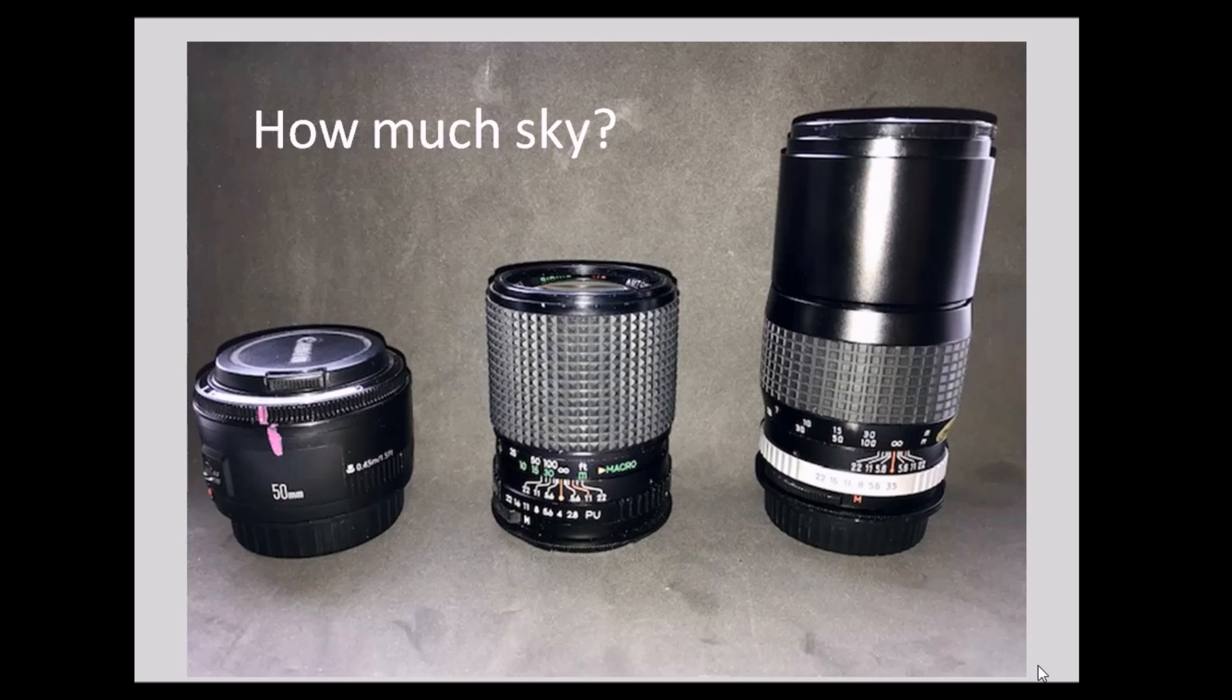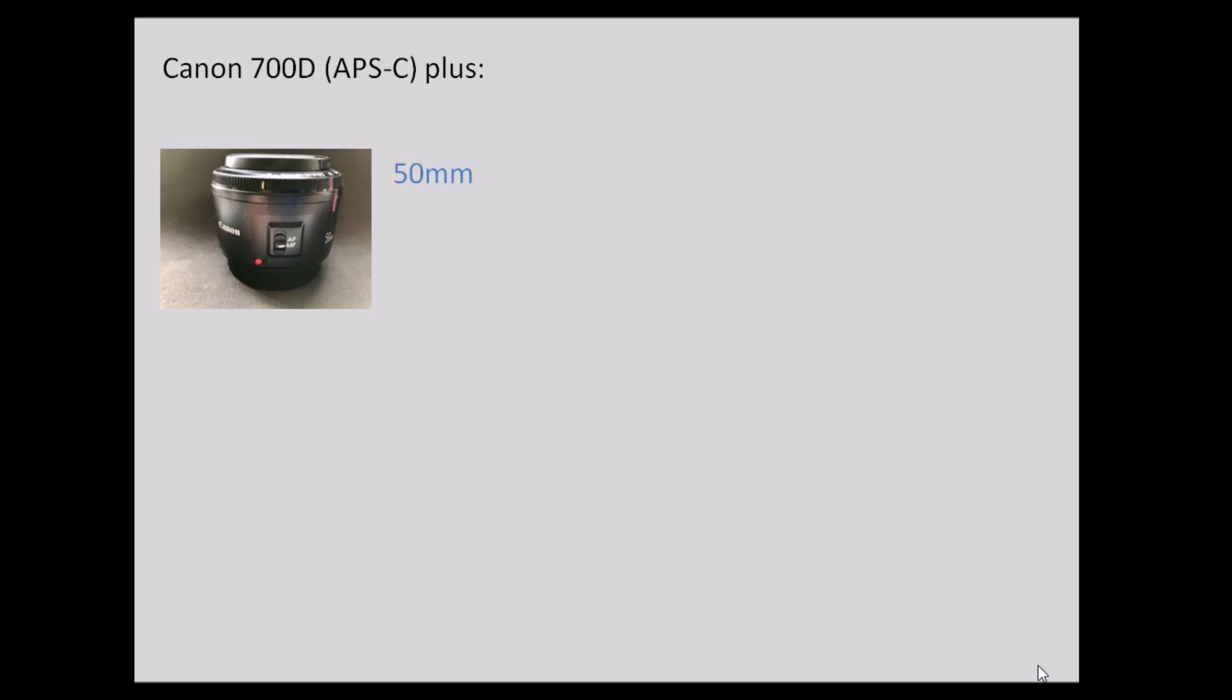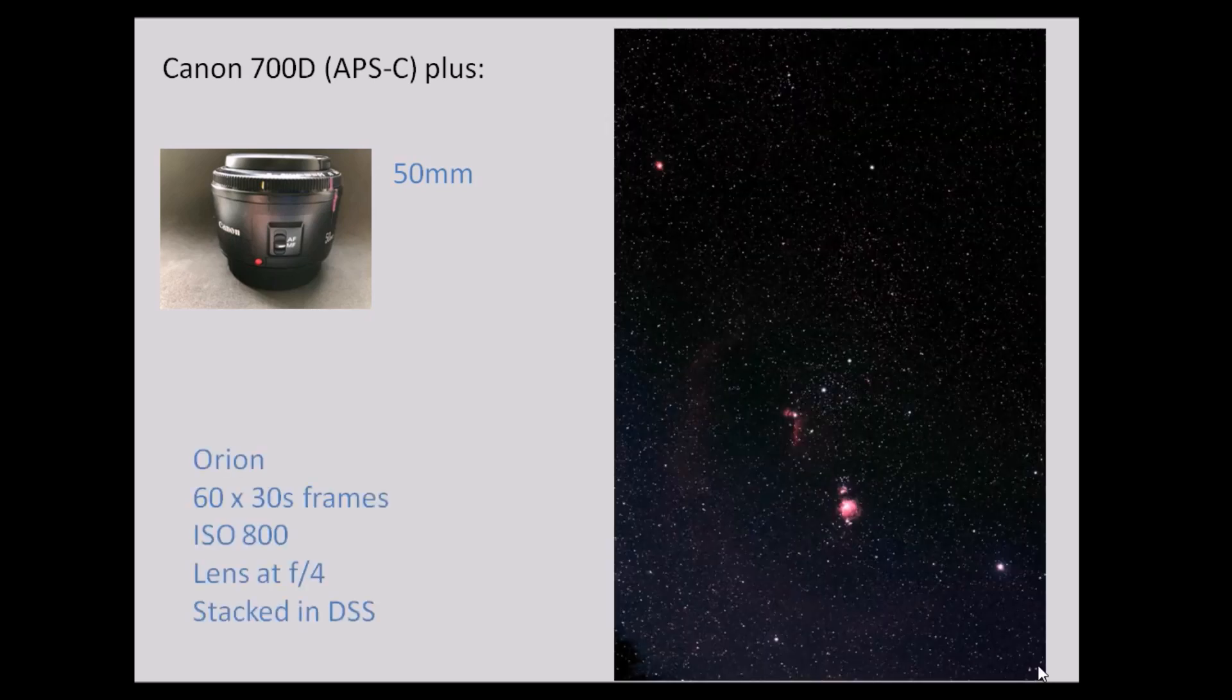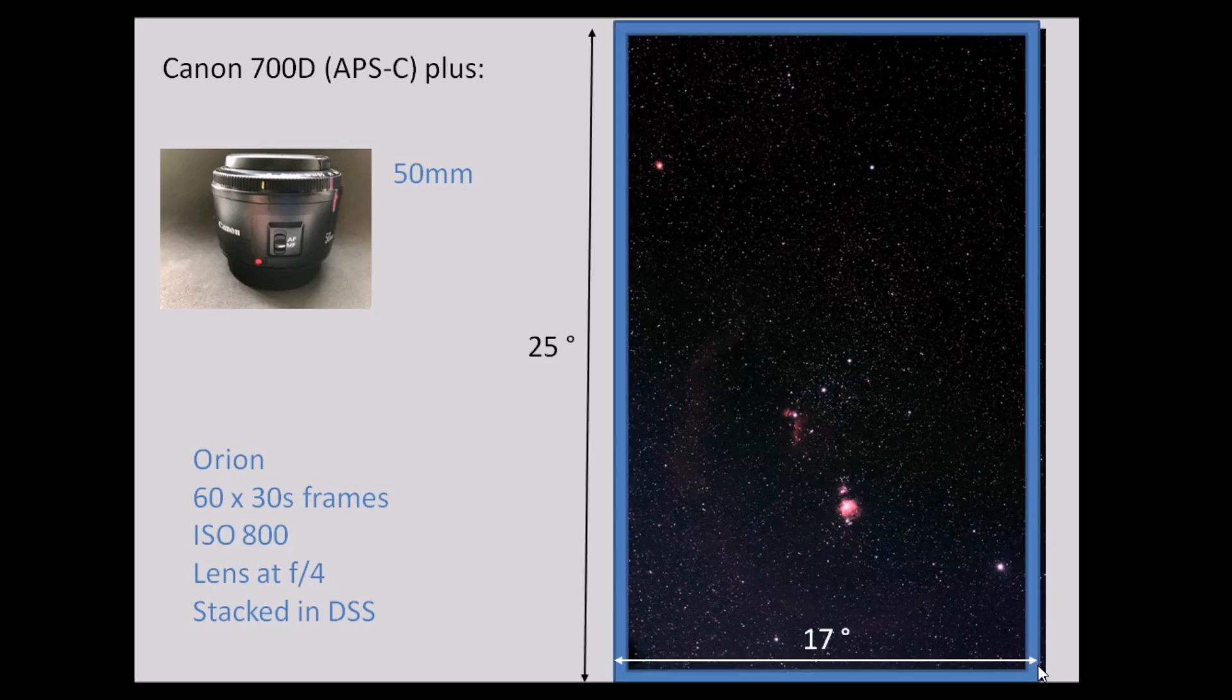OK, so the first thing to find out is how much sky can we capture with these three lenses. So I'm using a Canon 700D, which is a camera fitted with a crop sensor. So cameras like this, they've got a field of view that's around 1.5 times smaller than a full-frame camera. So when I'm using the camera with the 50mm lens, then this is what we can see. We can capture all of Orion. This is an image taking 60 frames, 30 seconds, stacked on top of each other in Deep Sky Stacker. And we can see that that's an area of sky around 25 degrees by 17 degrees. So it's quite a lot of sky.